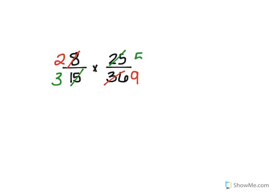15 divided by 5 is 3, and 25 divided by 5 is 5. So now instead of multiplying 8 times 25 and 15 times 36, I'm multiplying 2 times 5 and 3 times 9. That's a lot easier, and you get the same answer — you'd just have to simplify by 20 at the end otherwise. This makes it much easier.